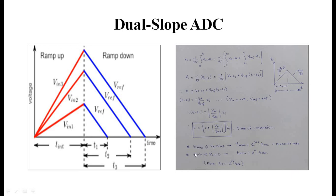From this we can calculate maximum and minimum conversion times. Tmax equals 2 to the power (n+1) times Tclock, obtained by setting Va equal to Vref. Tmin equals 2^n times Tclock, obtained by setting Va equal to zero. Importantly, the conversion time T is independent of the circuit components R and C — it depends only on the input voltages Va and Vref. This is why the dual slope ADC is considered highly accurate.